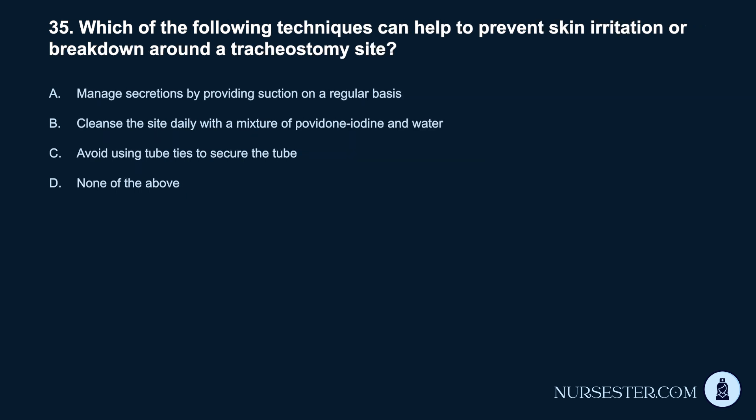Question 35. Which of the following techniques can help to prevent skin irritation or breakdown around a tracheostomy site? A. Manage secretions by providing suction on a regular basis. B. Cleanse the site daily with a mixture of povidone iodine and water. C. Avoid using tube ties to secure the tube. D. None of the above.